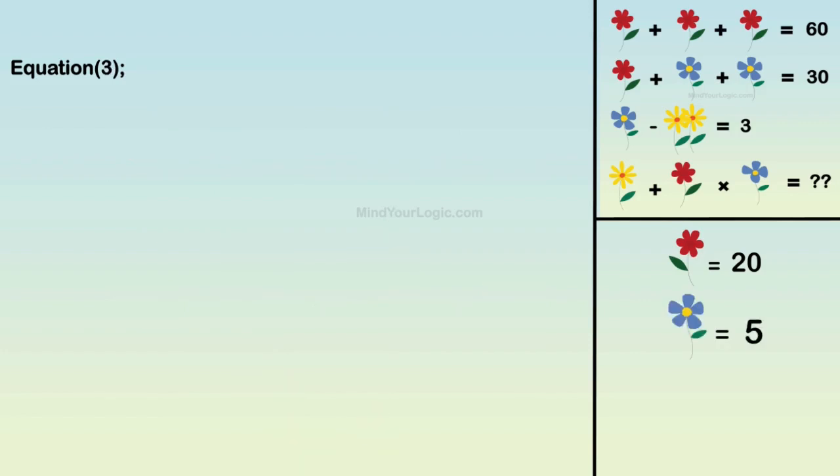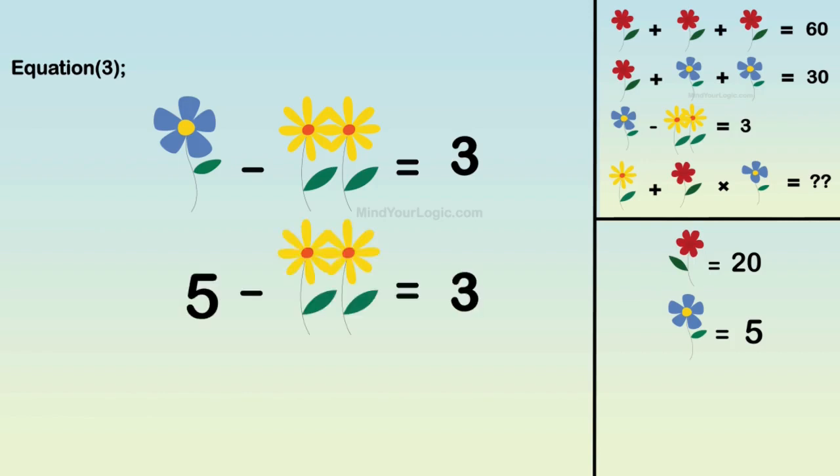Similarly, solve equation 3. Blue flower minus 2 yellow flowers equals 3. Substitute the value of blue flower. We get the value of yellow flower as 1.